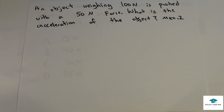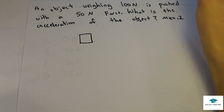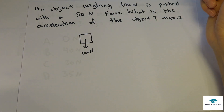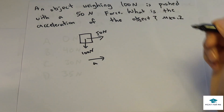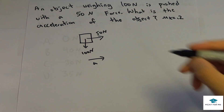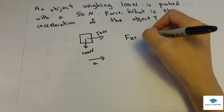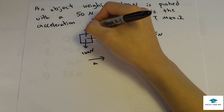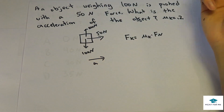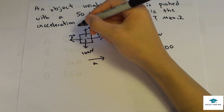Example 1: An object weighing 100 newtons is pushed with a 50-newton force. What is the acceleration? The coefficient of kinetic friction is 0.2. Drawing the picture, we have the object with a 50-newton push. We need the kinetic friction force: Fk = μk × Fn. Since there's no other vertical force and the object isn't falling, the normal force equals the weight, so Fn = 100 N. Therefore, Fk = 0.2 × 100 = 20 newtons.